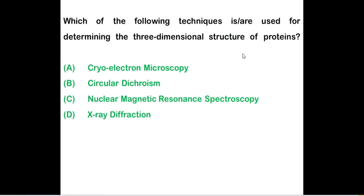Which of the following technique is used for determining the three dimensional structure of protein? This is again a repeated question. You can find the same question in the past GATE examination and in CSIR examination. Cryo-electron microscopy, nuclear magnetic resonance spectroscopy, X-ray diffraction - these are the three techniques that will be used for determining the three dimensional structure of protein. Whereas circular dichroism is used for determining the two dimensional structure of protein.